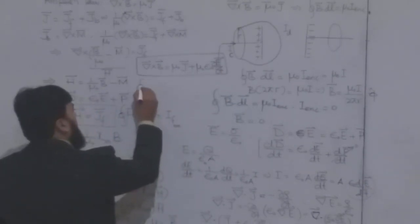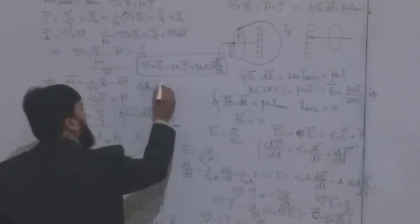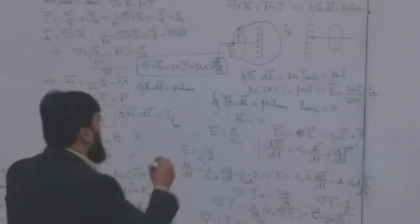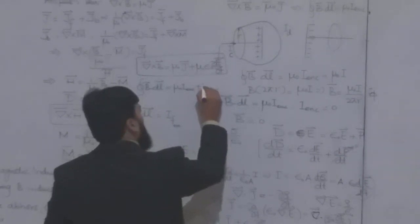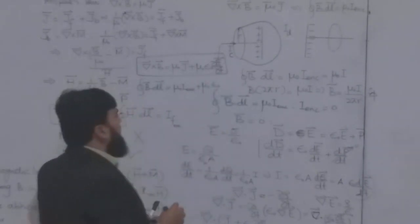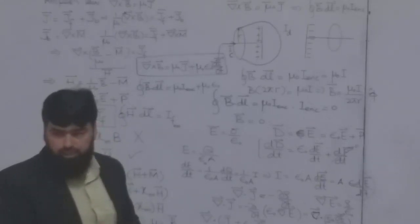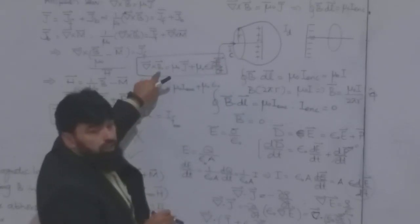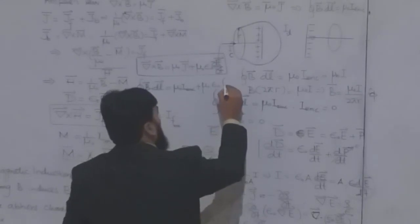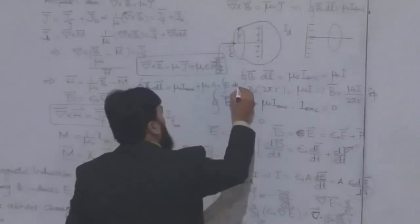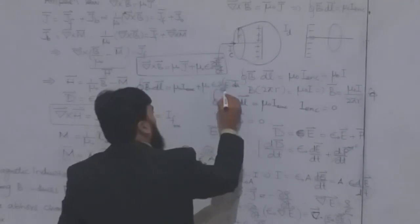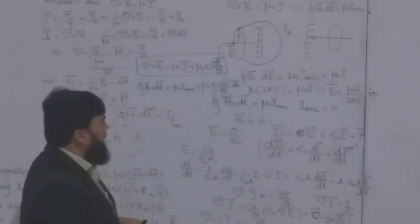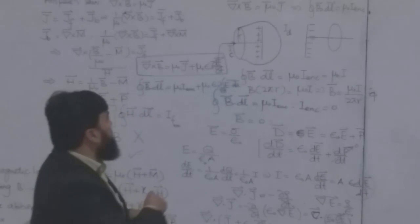In integral form it will be: the line integral of B dot dl is equal to mu naught times I enclosed plus mu naught times epsilon naught times del/del-t of the integral of E dot dA. So E dot dA and here will be the partial derivative del/del-t. That brings us back to this portion.